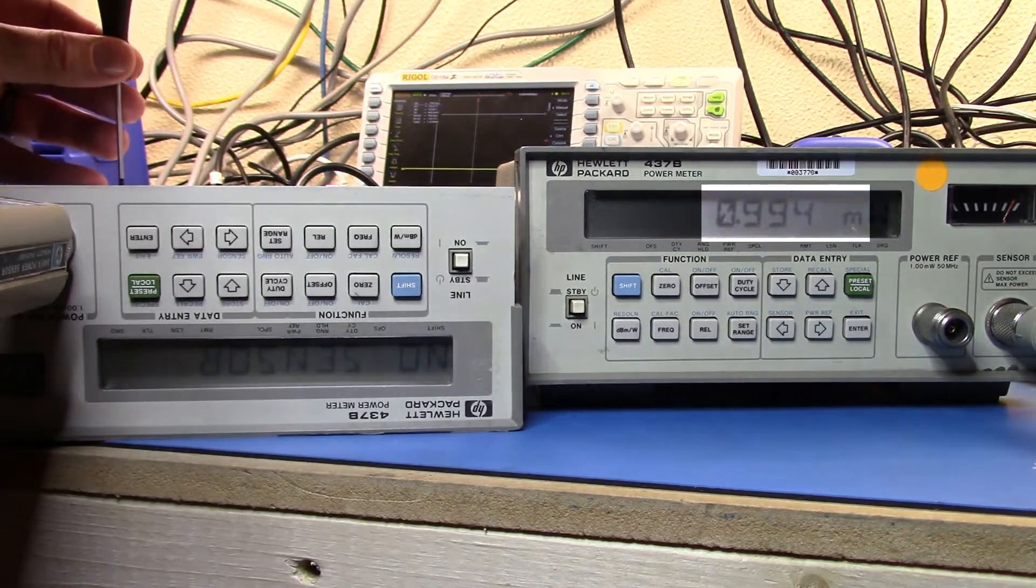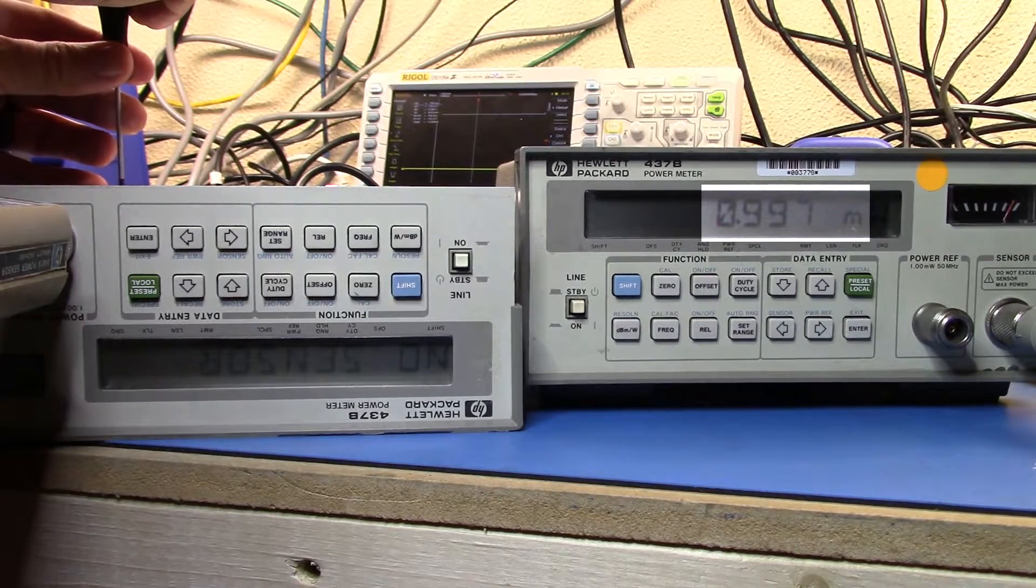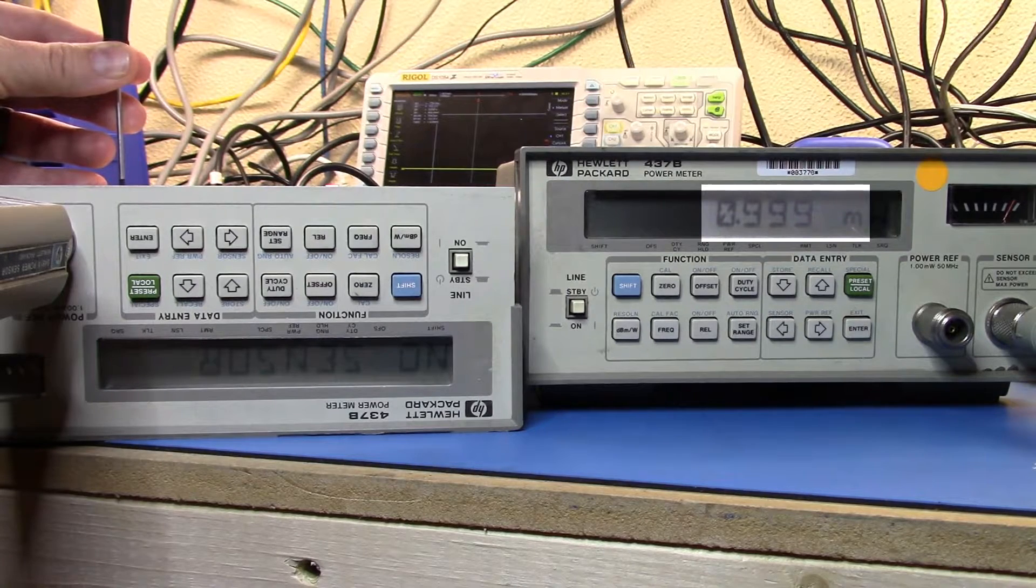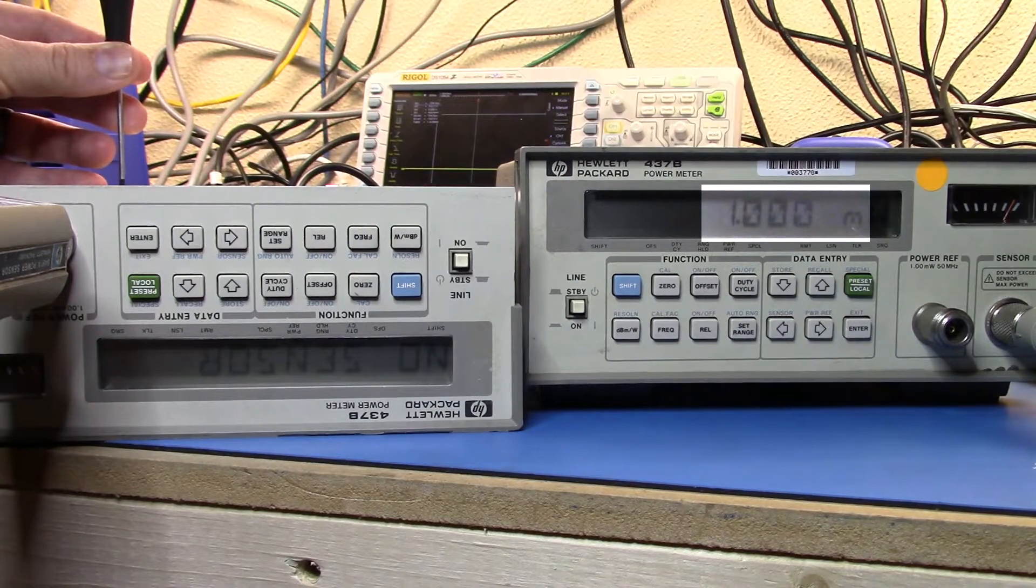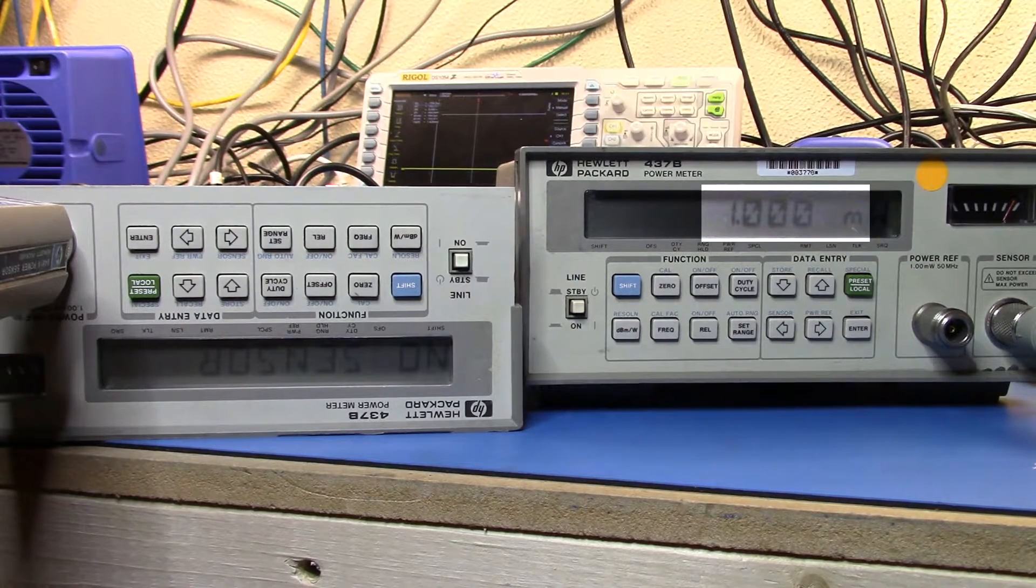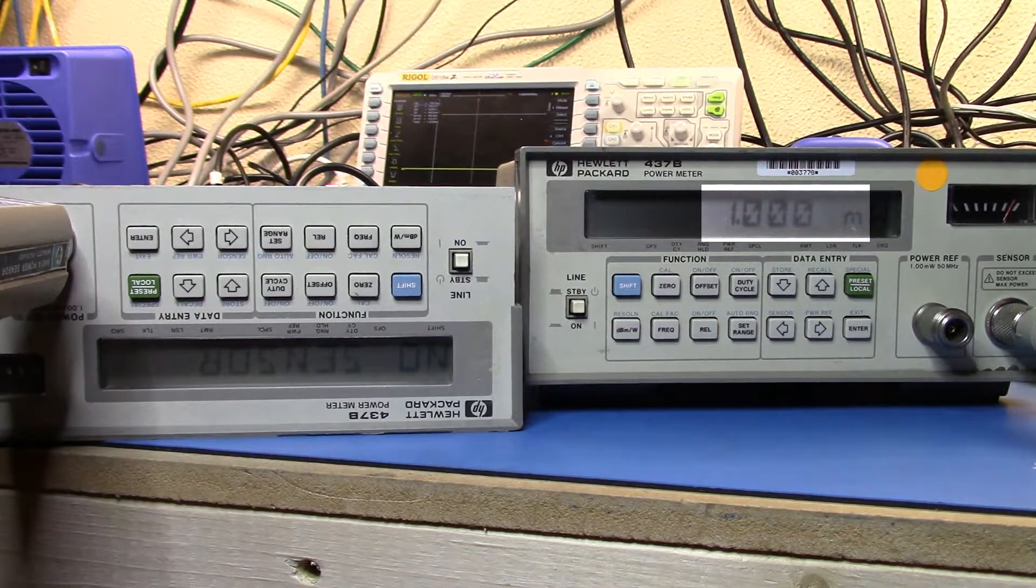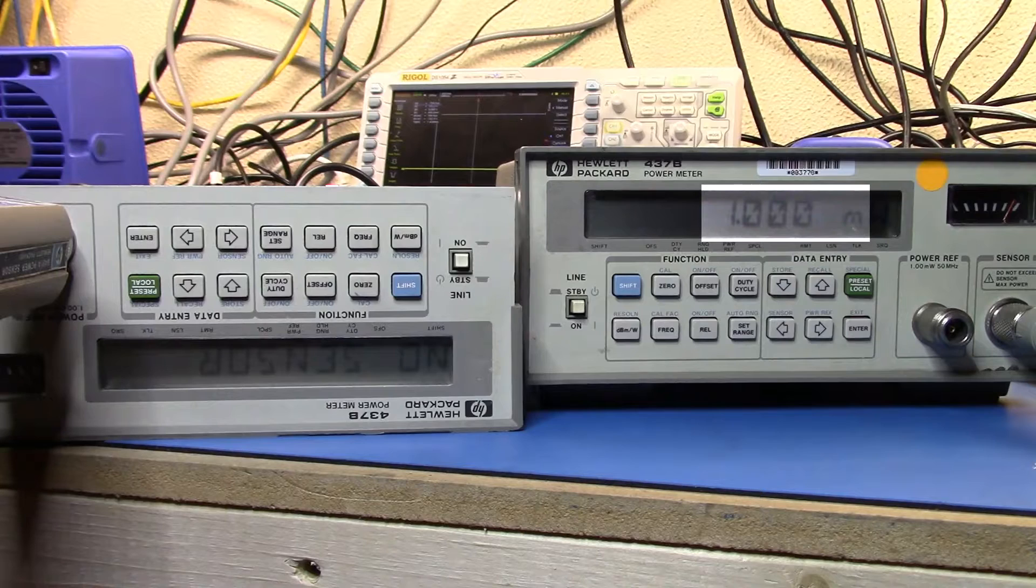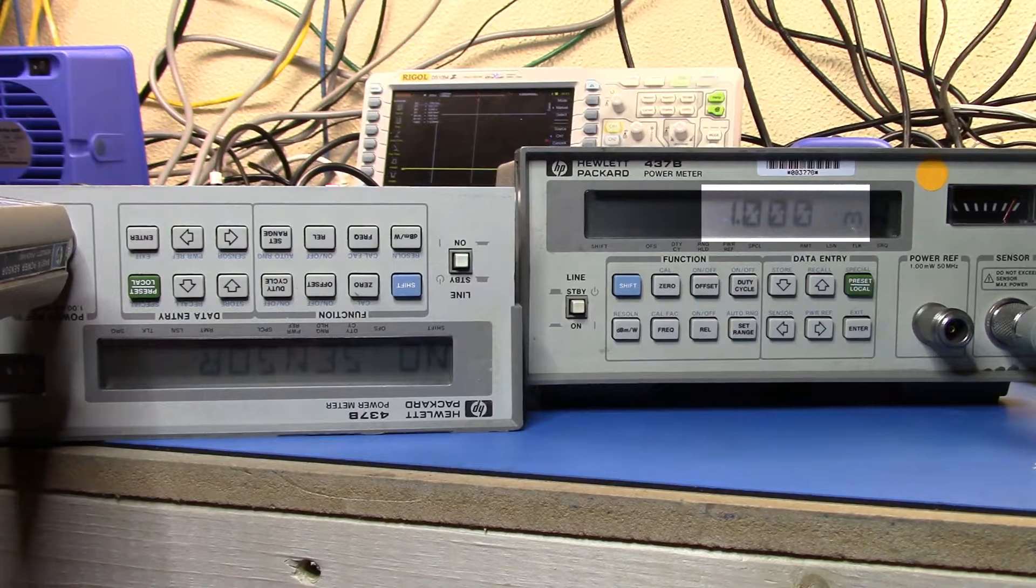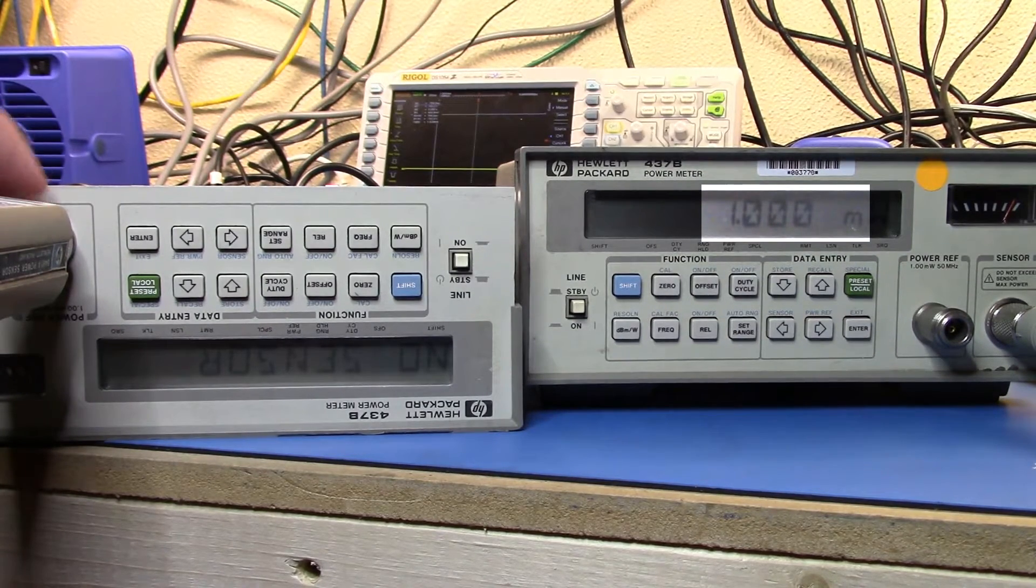So let me get in there and start turning that up a little bit. Now, technically, you're supposed to do this with a 432 and a 473, I think it is, the mismatch mount and do it. But you can do it this way within sort of the 2% tolerance that they give you in the manual.